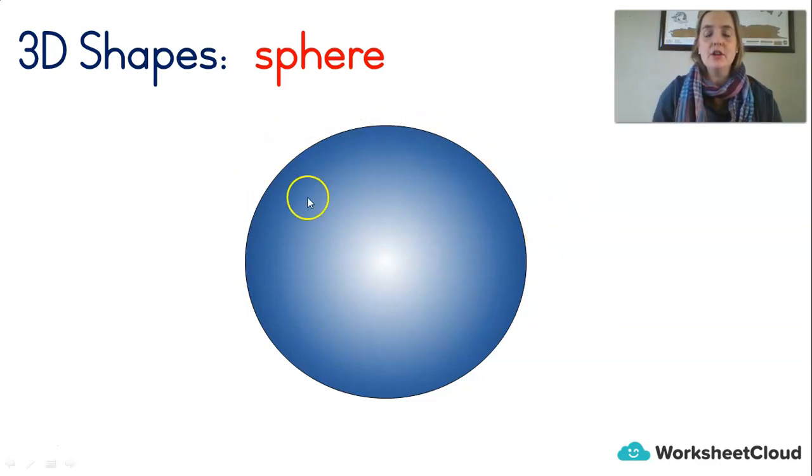It's a lot like a circle, but it's 3D, which means you can look around it, in front of it, pick it up. It's a ball shape. In grade R, you would have called this a ball shape. But now that we're grade 1s, we know the fancy word is sphere.